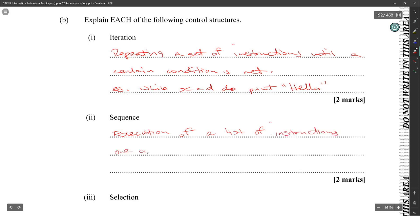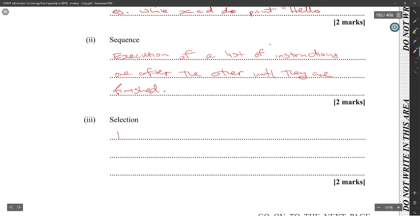Selection is the choice of two options based on the results of a condition. Example: if x is greater than 10, then print yes, else no. Sketch a diagram to illustrate the stages of the program development process.